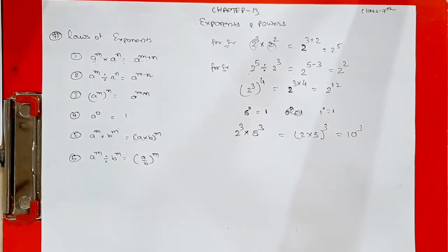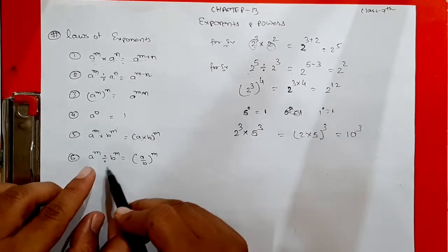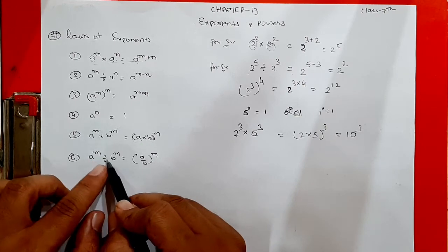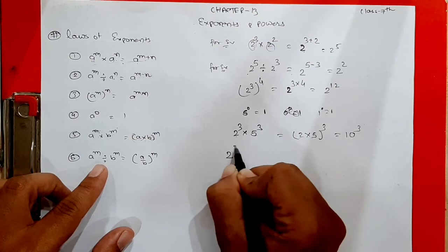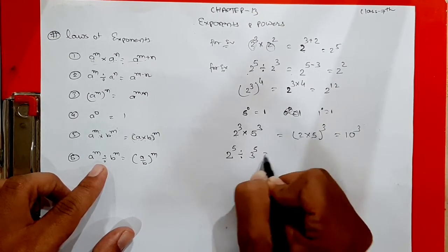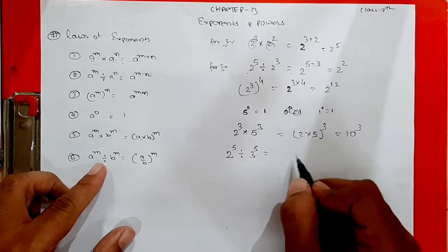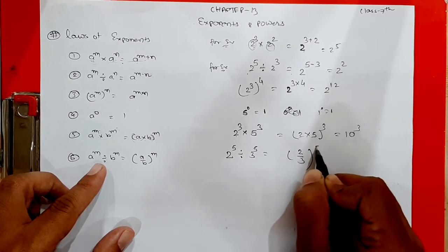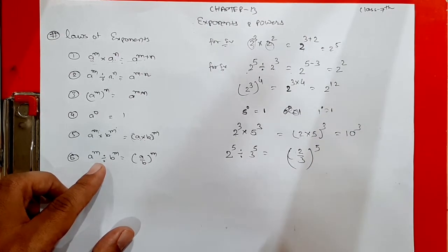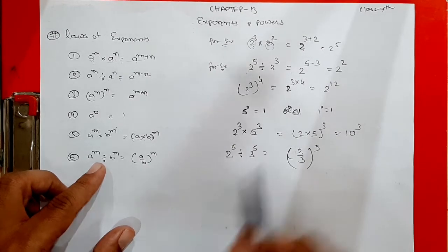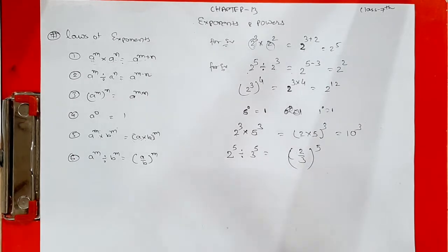The sixth rule: a raised to m divided by b raised to m — bases are different, there is a division sign, and the power is common. So we divide the bases and write the common power. For example, 2 raised to 5 divided by 3 raised to 5 — same power, different bases — gives (2/3) raised to 5. This form is called exponential form, which we studied in the last video.